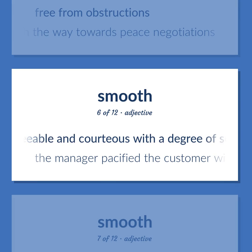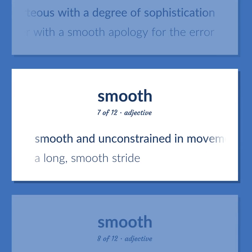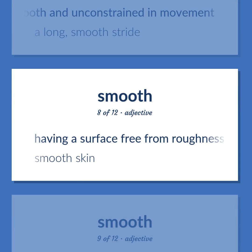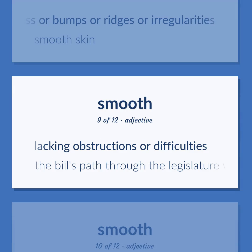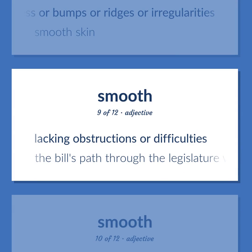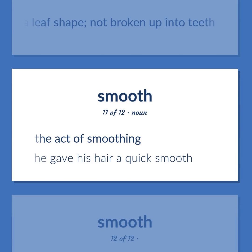Smoothly agreeable and courteous with a degree of sophistication. The manager pacified the customer with a smooth apology for the error. Smooth and unconstrained in movement. A long, smooth stride. Having a surface free from roughness or bumps or ridges or irregularities. Smooth skin. Lacking obstructions or difficulties. The bill's path through the legislature was smooth and orderly. Of the margin of a leaf shape, not broken up into teeth. The act of smoothing. He gave his hair a quick smooth.